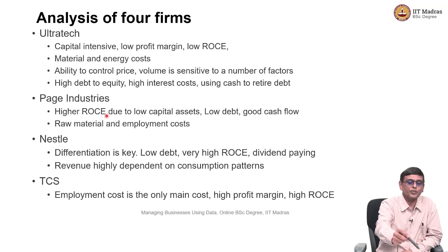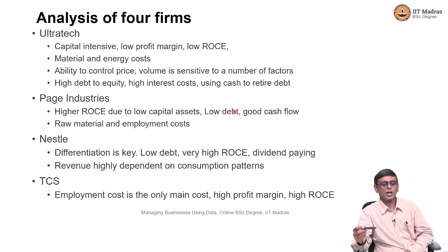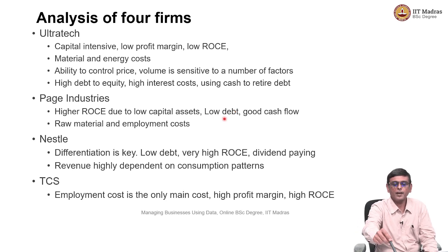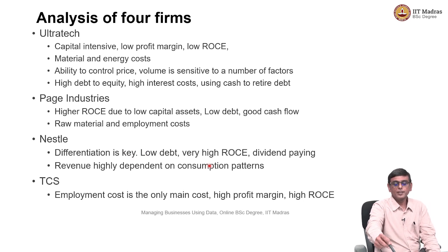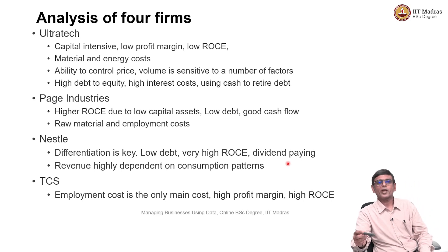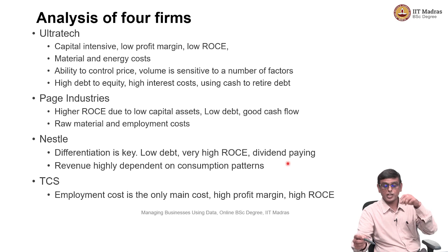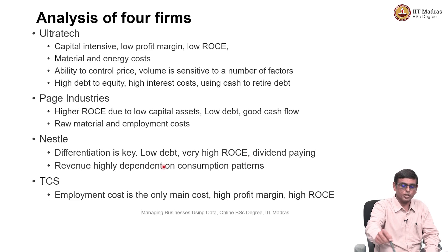Page Industries is a slightly different industry from the textile sector. ROCE is higher compared to Ultratech in cement, because they do not have much capital assets. Their main costs are employment costs and raw material costs, and they have low debt and good cash flow. Then we saw FMCG, with Nestle as the example. Differentiation is very key in an FMCG company. These companies also operate with very low debt and very high ROCE — 100 plus percent. They are dividend-paying companies because they are not growing fast enough near term to need capacity addition.